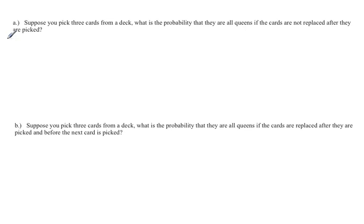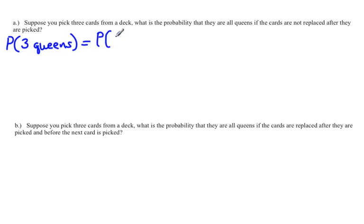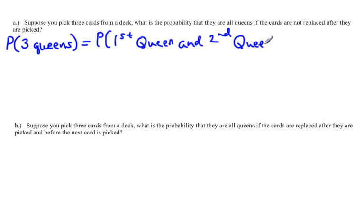We'll start by rewriting this probability statement in mathematical terms. We want the probability that all are queens when picking three cards — the probability of three queens. That means the first card has to be a queen, and the second, and the third. That's why this is a multiplication principle — because we have the word 'and' in here.